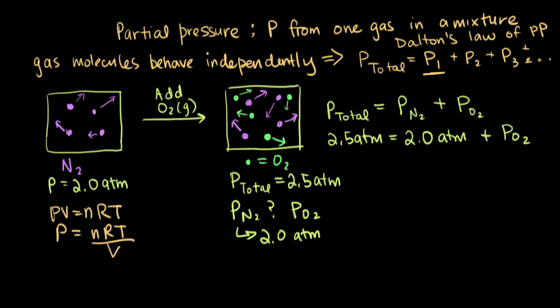But now we can just rearrange this equation to find PO2. So PO2 is equal to our total pressure, 2.5 atmospheres, minus the partial pressure of nitrogen. So we can see that our partial pressure of oxygen is just 0.5 atmospheres.